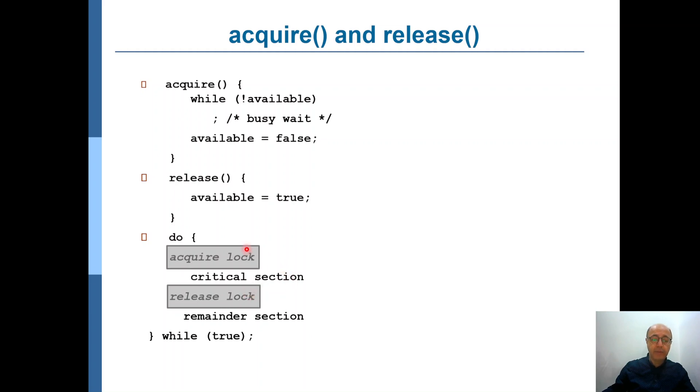However, to implement the acquire method here, as you can see in the implementation, you have a while loop that's working on a boolean variable called available.